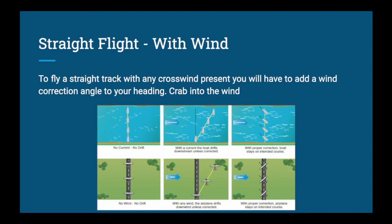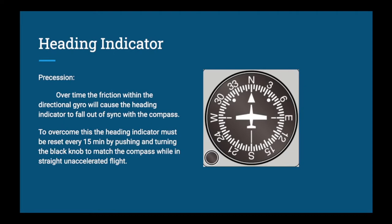The heading indicator suffers from precession over time. There is friction in the bearings causing it to drift off your set heading, and there is also apparent precession from the Earth rotating beneath you as you fly. Over time, your heading indicator becomes unsynchronized from your compass — it may only be five or ten degrees, but it makes a big difference. To overcome this, every 15 minutes or so compare your heading indicator to your compass during straight and level unaccelerated flight, and adjust it to match the compass if needed.